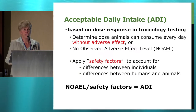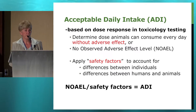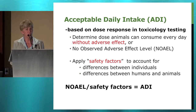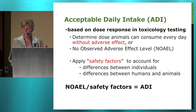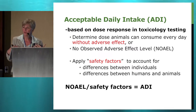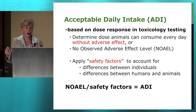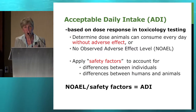This is termed the no observed adverse effect level — not very creative, but that's how toxicologists are. We are not determining the toxic level; we are determining what is safe with no adverse effects for one's lifetime. To that number, we apply what are called safety factors, usually a hundredfold. They can be more depending on uncertainty, to account for differences between individuals and the potential difference between humans and animals.